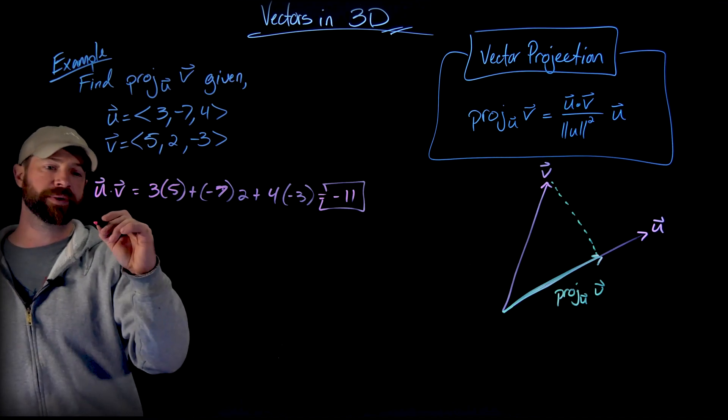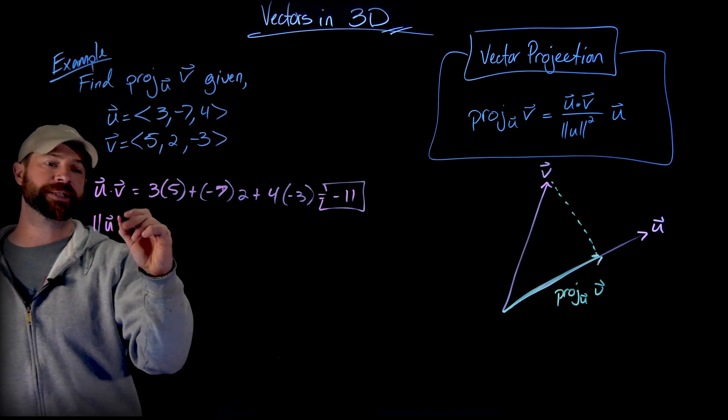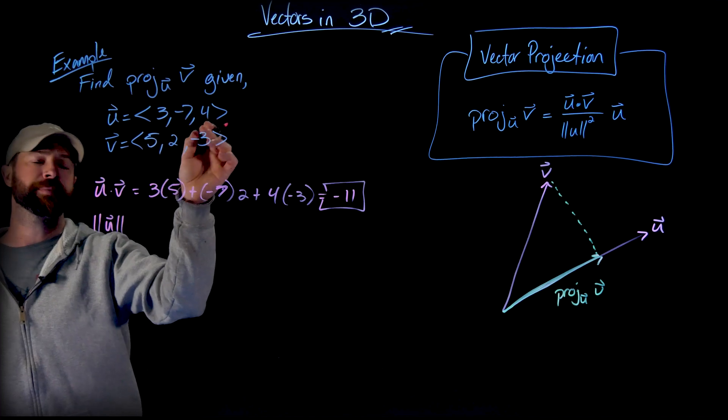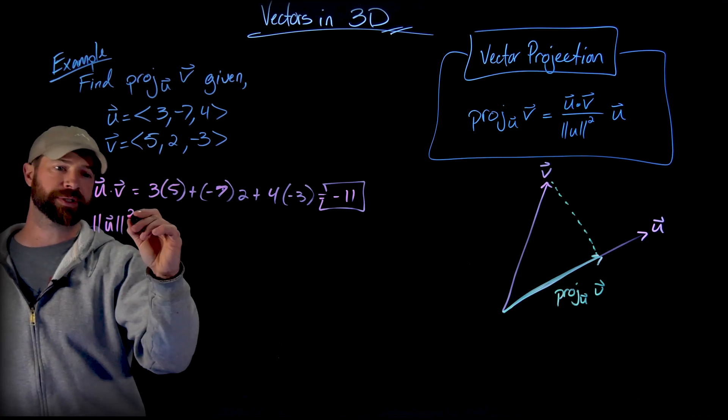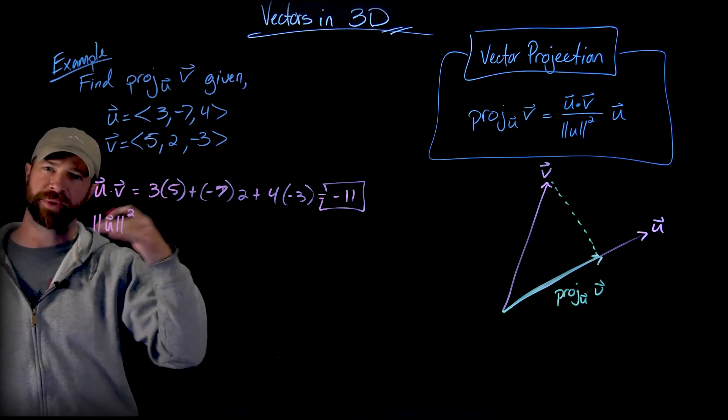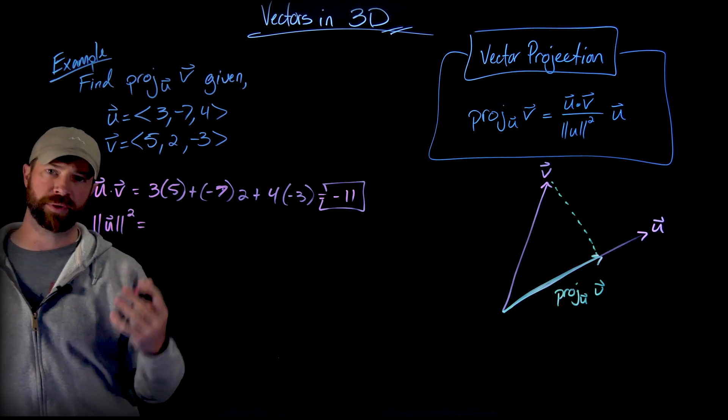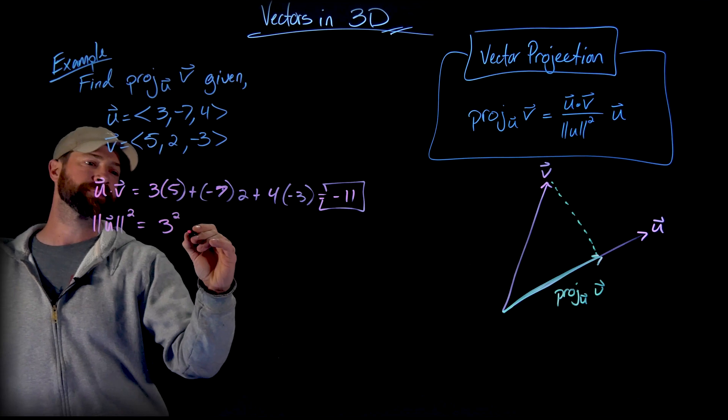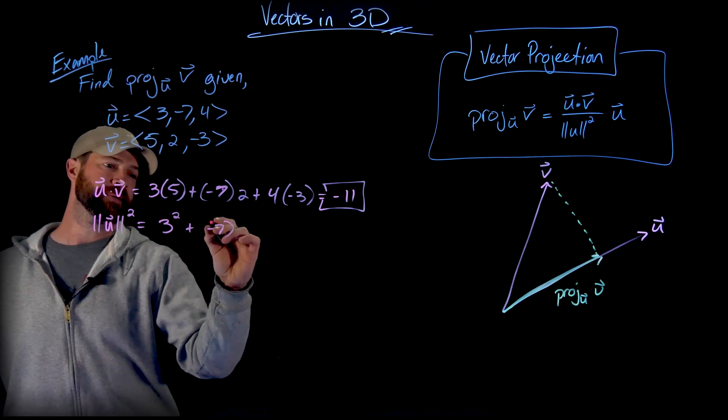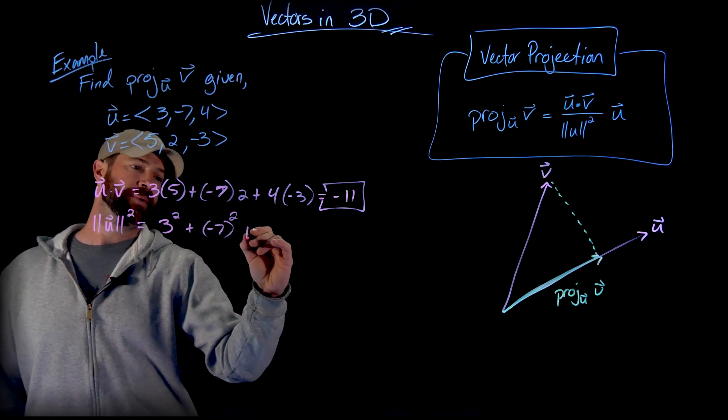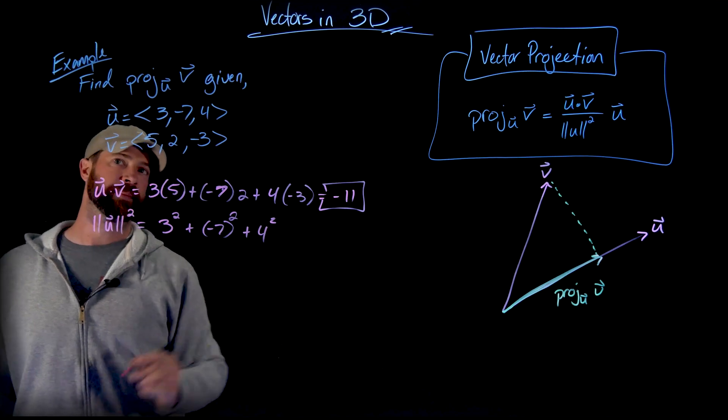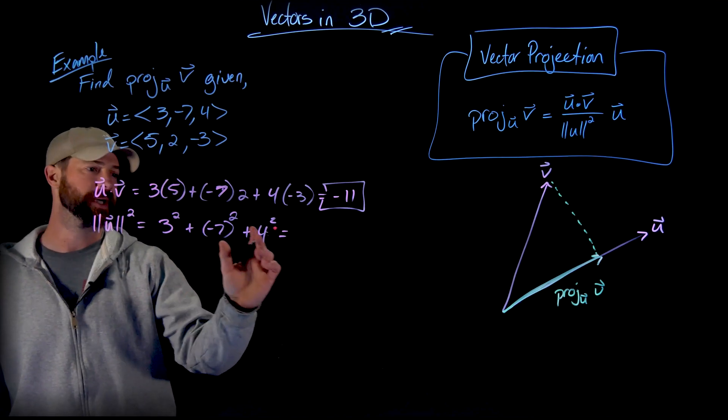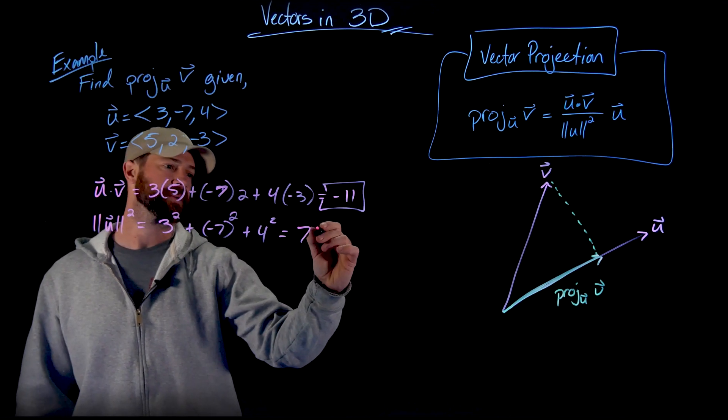And then the magnitude of U squared, that is just squaring each of these component pieces, but then undoing the square roots. This square just means we don't apply the square root after we do that like we usually would do with magnitude. And so this is 3 squared plus negative 7 squared and then plus 4 squared, which is 9 plus 49 plus 16, which I got was 74.